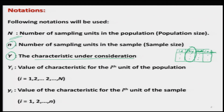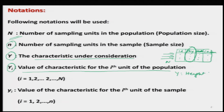Under this variable there are observations for students numbered 1, 2, 3, 4, and so on — suppose there are capital N number of students. The value of capital Y for those students is denoted by capital Y_i, which is essentially the value of the characteristic for the i-th unit in the population. So for example, the height of the first student is denoted Y_1, the second student Y_2, and the capital N-th student capital Y_N. These are some numerical values.